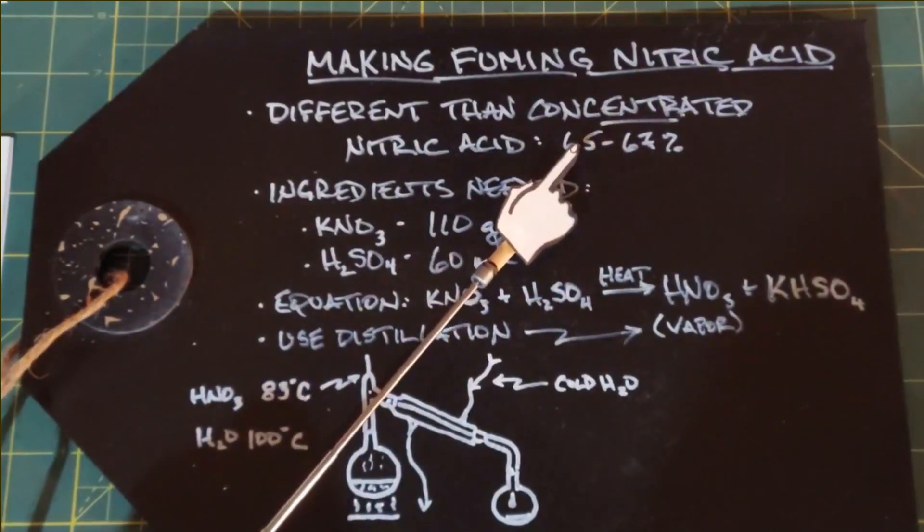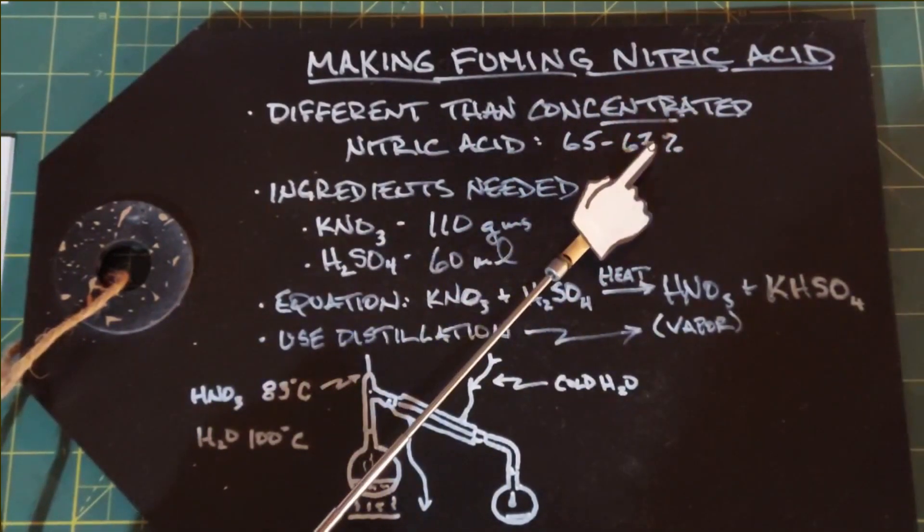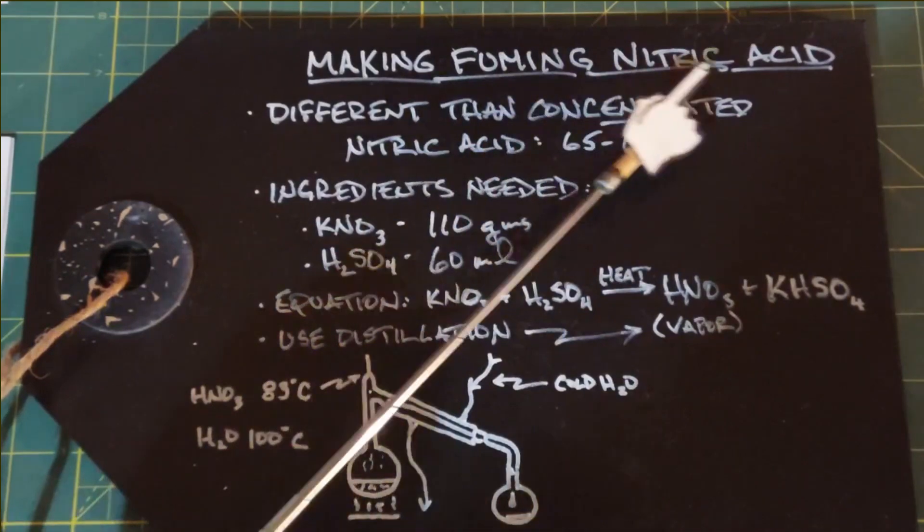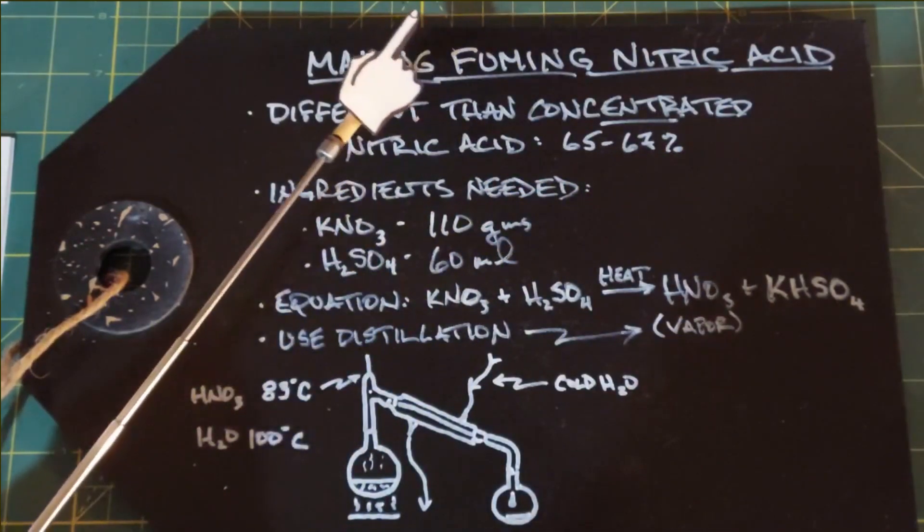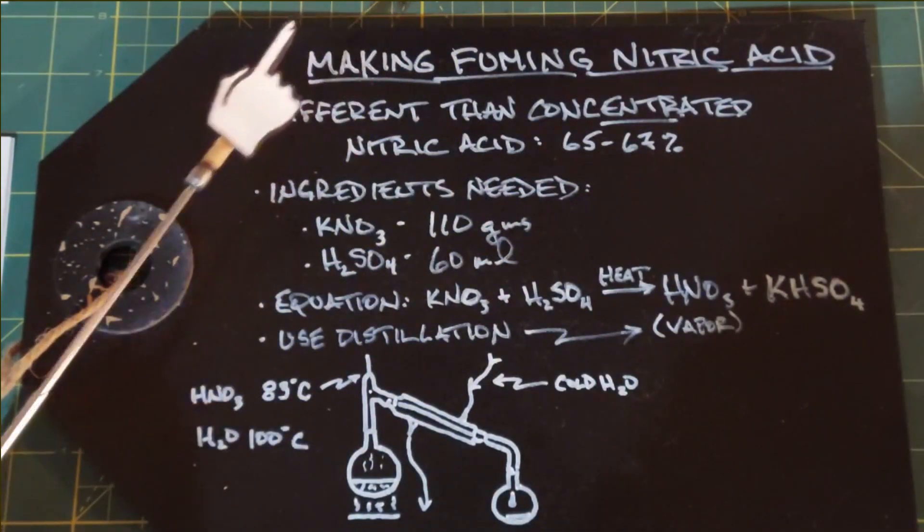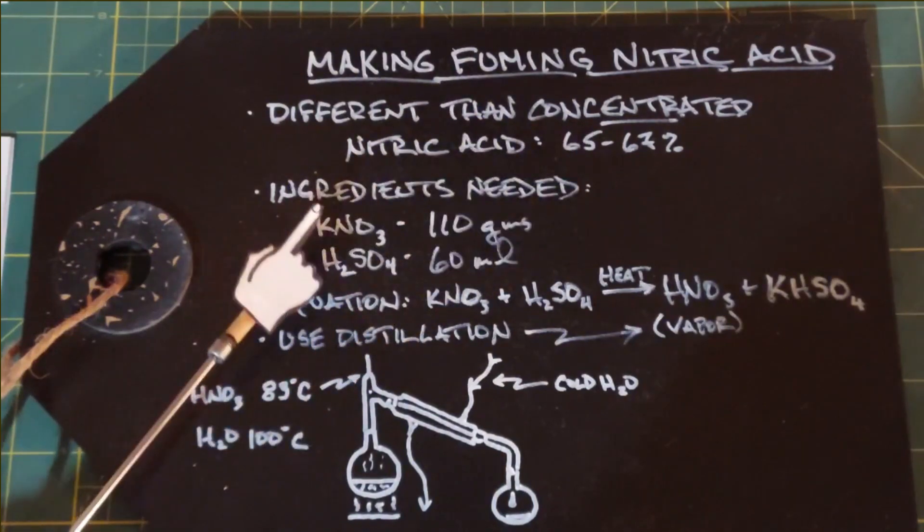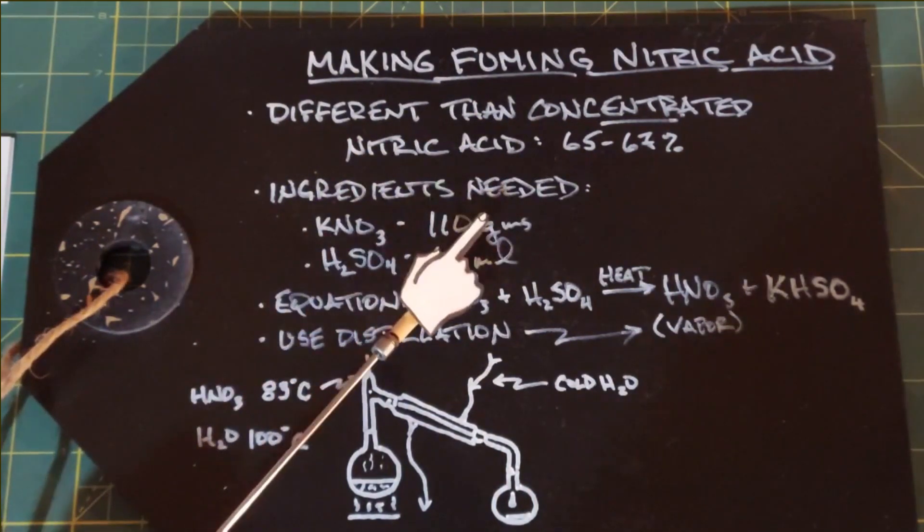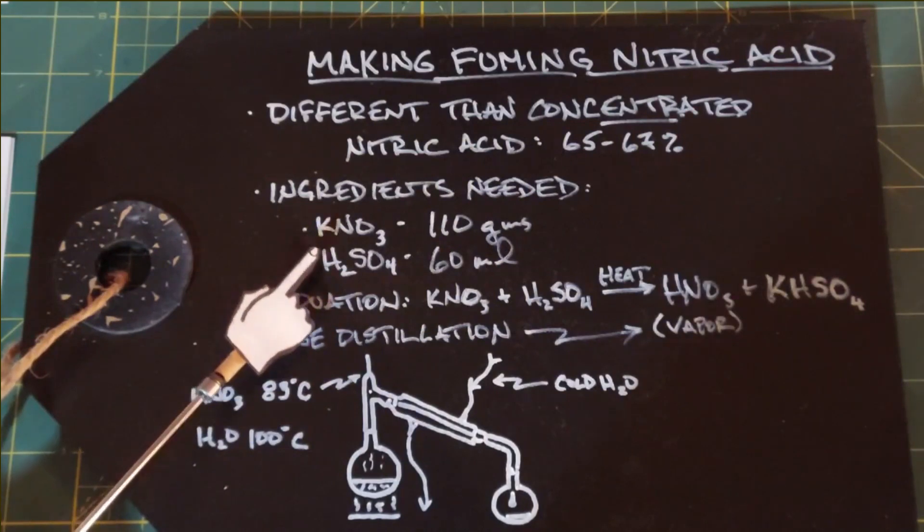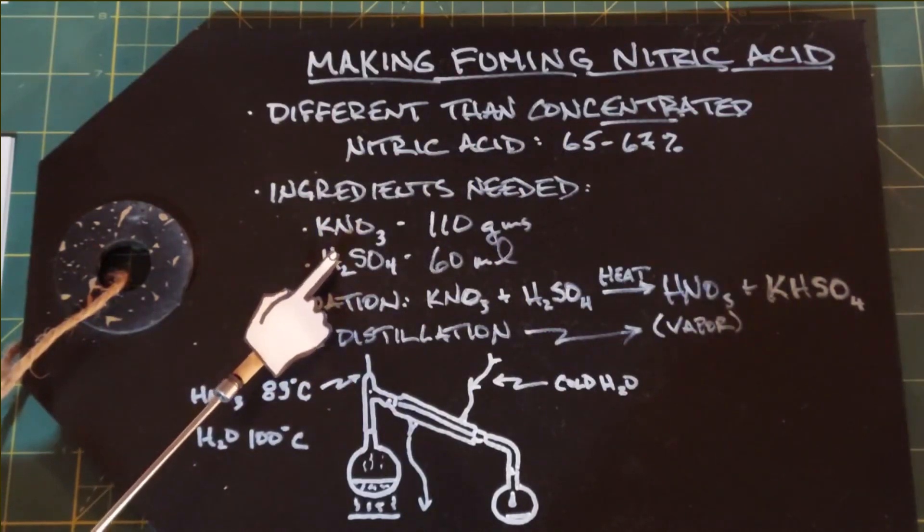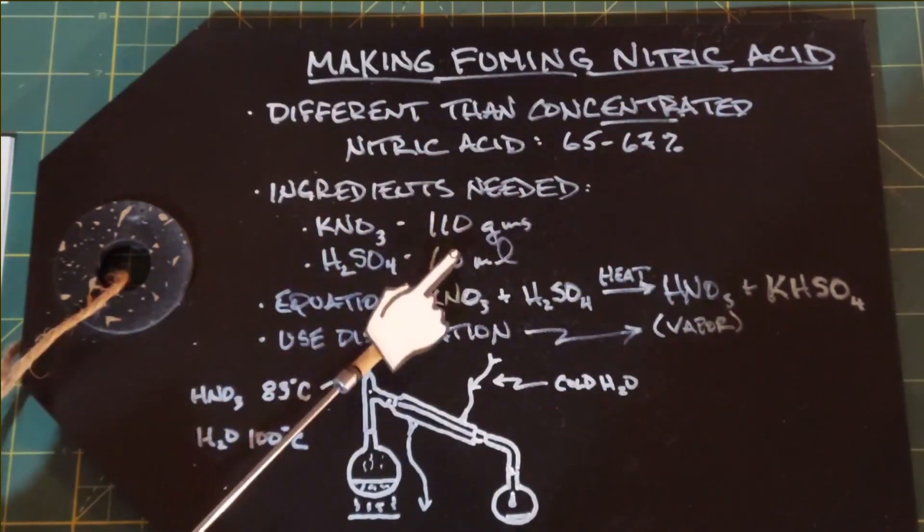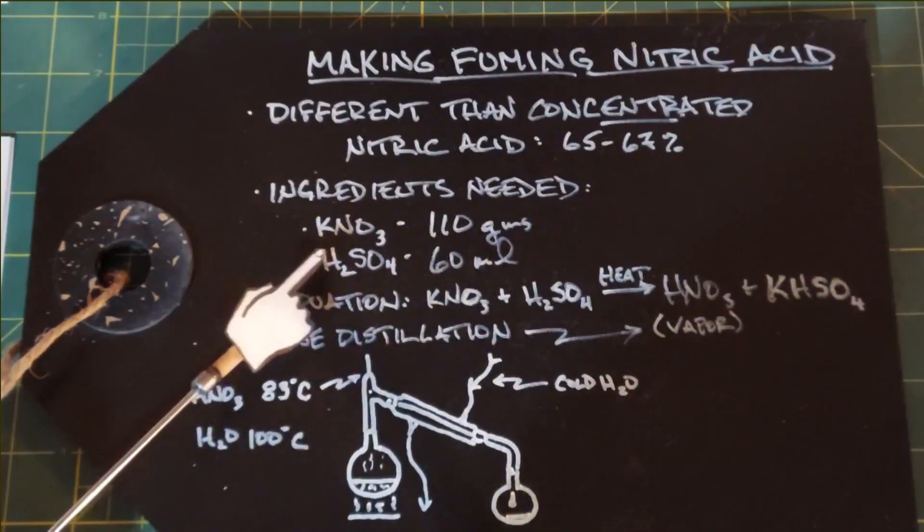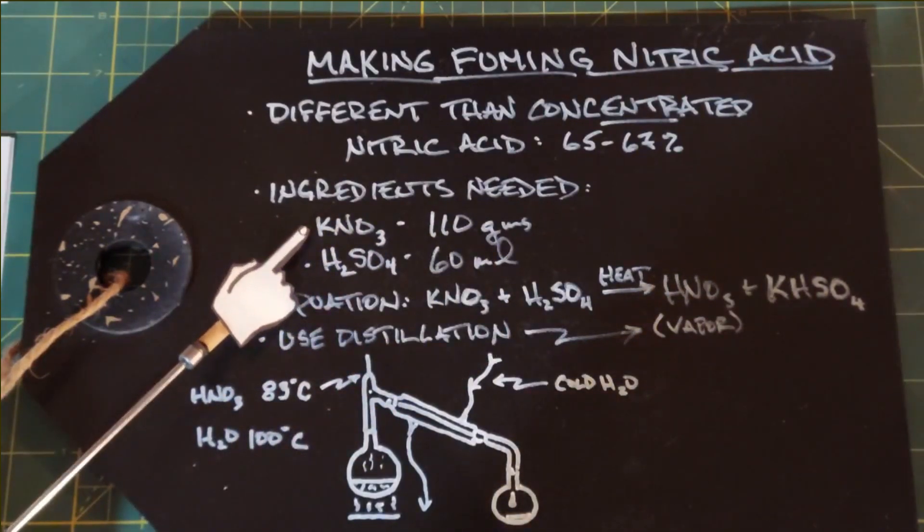Fuming nitric acid is close to 100 or at 100 percent. The ingredients we need for this are potassium nitrate, 110 grams, and as concentrated sulfuric acid as you can get, hopefully near 98-99 percent, 60 milliliters. That's just to get rid of as much water as we can.